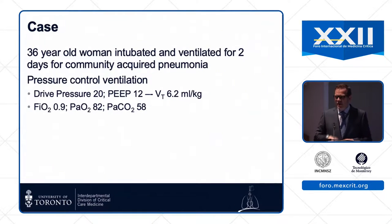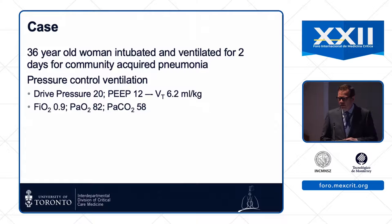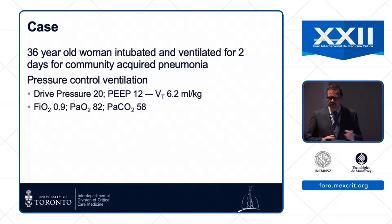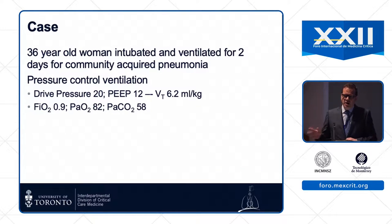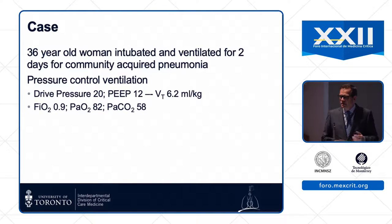I think it's useful to think about this around a clinical case, because these are cases that we see not infrequently. Most patients, once you get them intubated and onto a ventilator, are not so difficult to oxygenate — peak of 10, 50% oxygen, everything's okay. But there are certainly an important minority of patients who still have significant hypoxemia despite a moderate amount of PEEP, and are on 80, 90, or even 100% oxygen to keep their sats up.